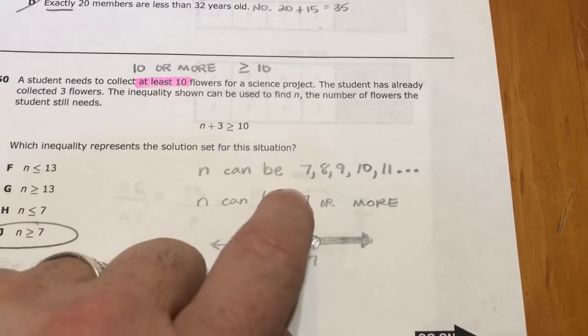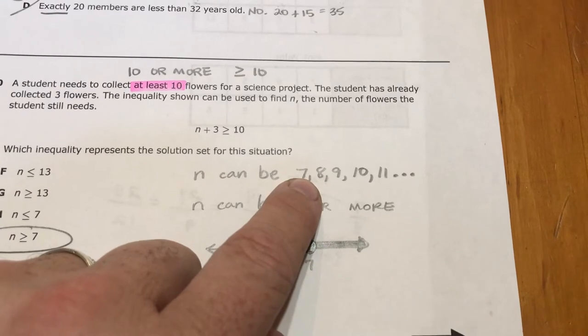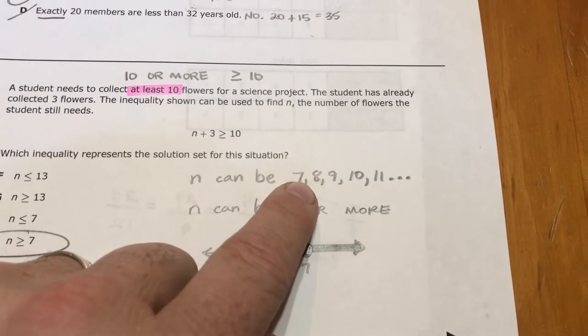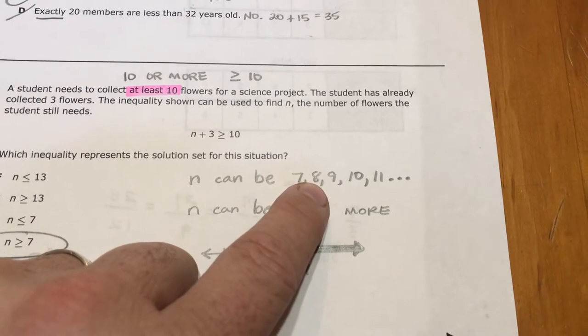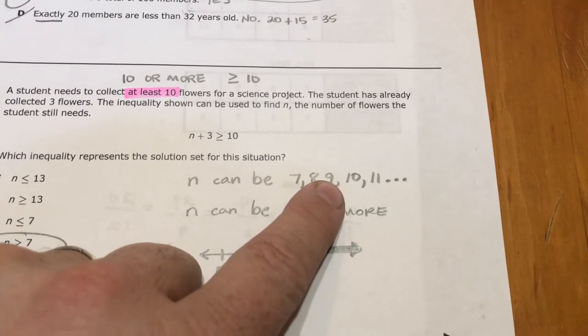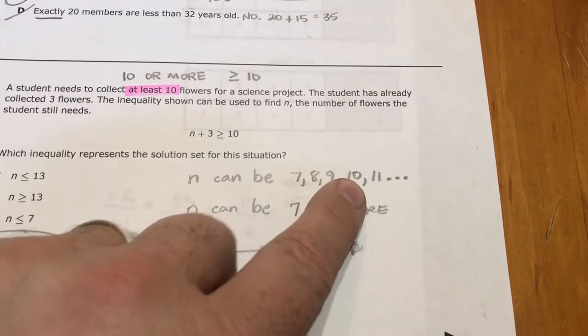Well, 7 would work. 7 plus 3 is equal to 10, so that would work. 8 plus 3 is going to be greater than 10. 9 plus 3 is greater than 10. 10 plus 3 is greater than 10. 11 plus 3 is greater than 10, and so on, and so on, and so on.